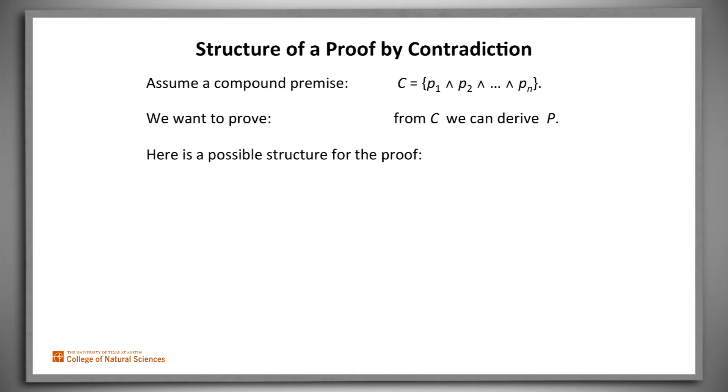So, here's a possible structure for our proof. We assume C. We now conditionally assume not P, the negation of the thing we want to prove. We reason.